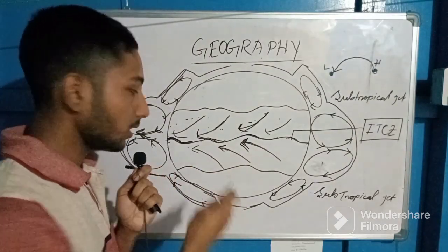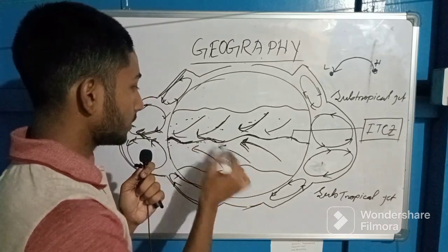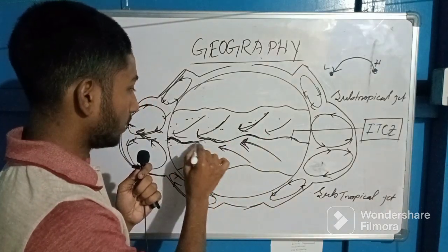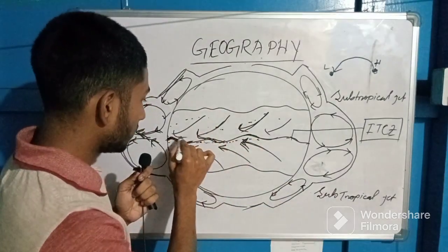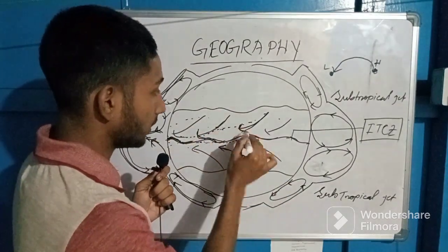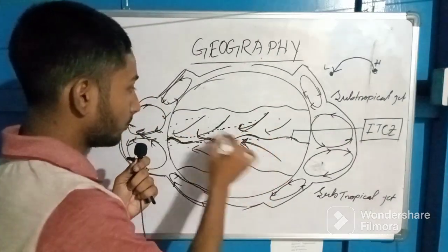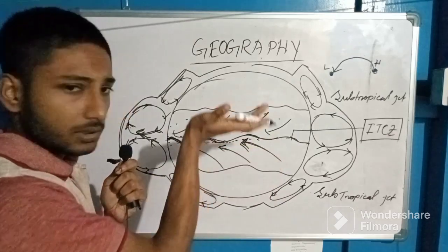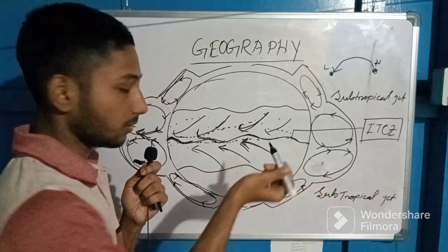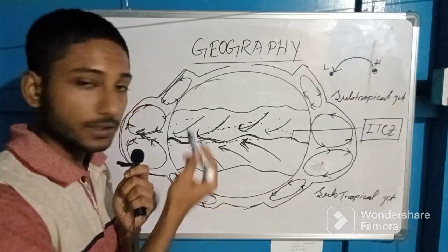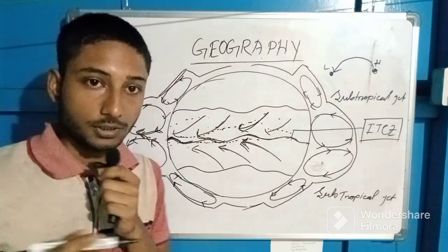So the ITCZ shifts upward in the northern hemisphere, and in the case of the northern hemisphere, you can see there is maximum land area, so the low pressure zone is created slightly upward from the equator. That is the concept of ITCZ. I hope you understand, and thanks for watching this video.